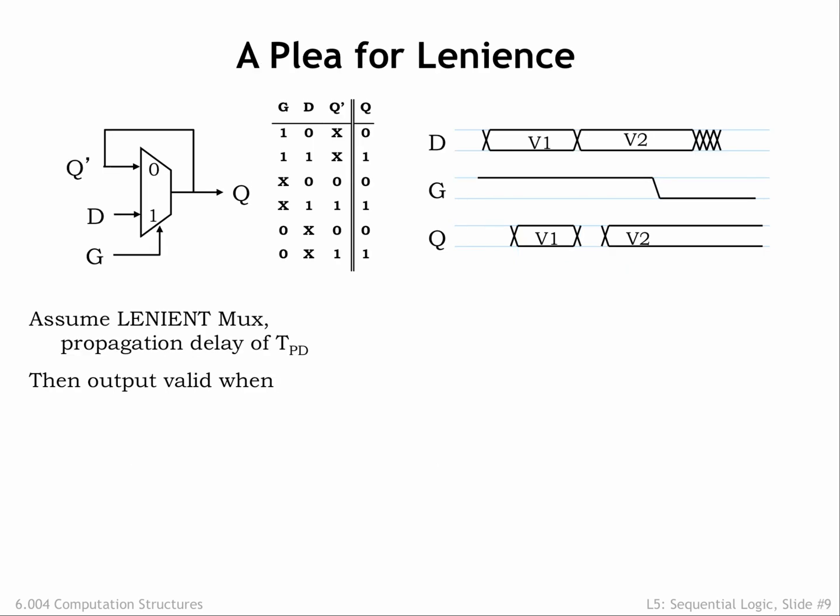We're going to have to ensure that a 1 to 0 transition on G doesn't affect the Q output. That's why we specified a lenient MUX for our memory component. The truth table for a lenient MUX is shown here. The output of a lenient MUX remains valid and stable even after an input transition under three conditions. Condition 1: when loading the latch by setting G high, once the D input has been valid and stable for TPD, the Q output will be valid and stable with the same value as D, independently of Q's initial value.